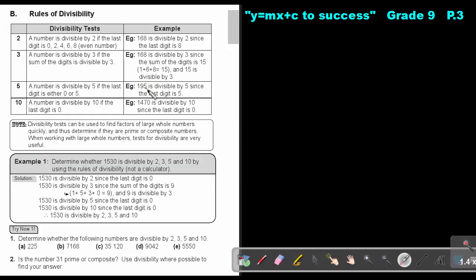A number is divisible by 5 if the last digit is either 0 or 5. A number is divisible by 10 if the last digit is 0. Divisibility tests can be used to find factors of large whole numbers quickly and thus determine if they are prime or composite numbers. When we're working with large whole numbers, tests for divisibility are very useful.